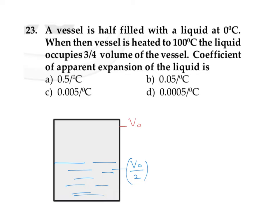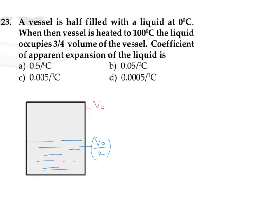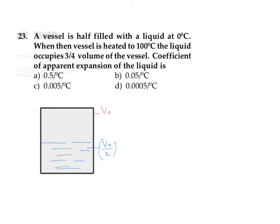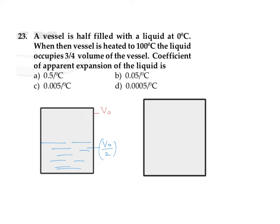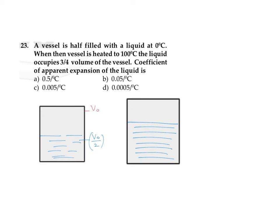When the vessel is heated from zero to 100 degrees Celsius, there is a corresponding increase in the volume of both the container and the liquid. It is given that the liquid now occupies three-fourths of the vessel's volume. So if the final vessel volume is V, the liquid volume becomes 3V divided by 4.